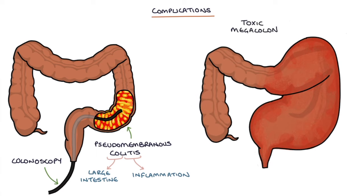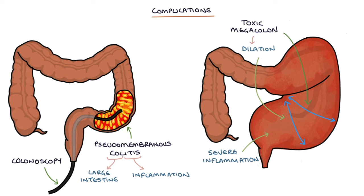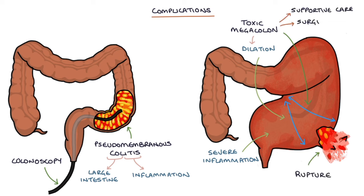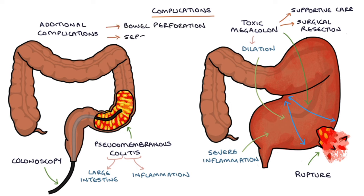Toxic megacolon is a complication of severe inflammation in the large intestine and involves dilation of the colon. Patients with toxic megacolon are very unwell and have a high risk of bowel rupture. Treatment involves supportive care and surgical resection of the affected portion of the bowel. Additional complications of C. difficile include bowel perforation and sepsis.